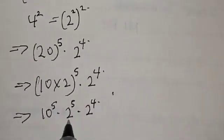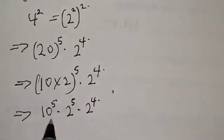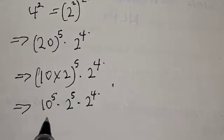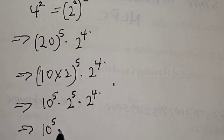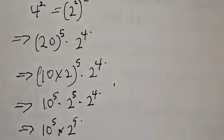Since we have 2 raised to the power 5 and 2 raised to the power 4, this can be expressed as 10 raised to the power 5 multiplied by 2 raised to the power 9, because 5 plus 4 equals 9.